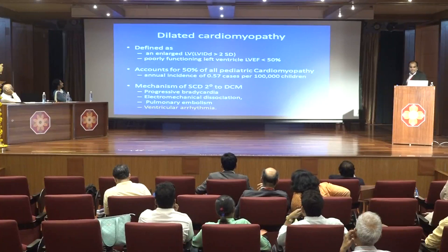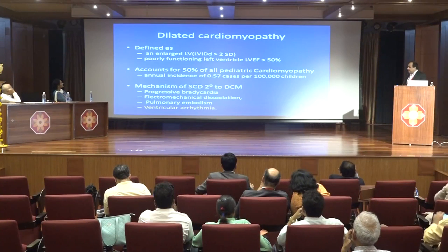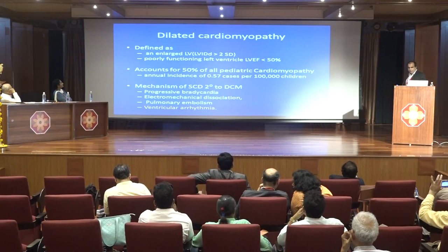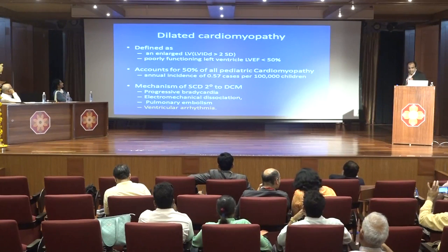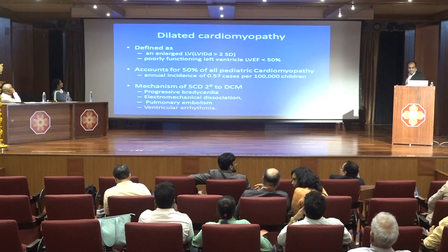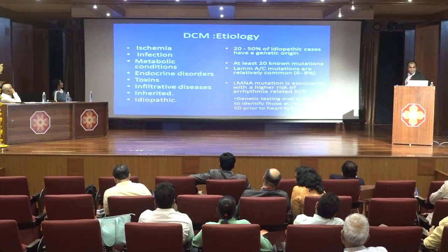The second cardiomyopathy is dilated cardiomyopathy, defined as an enlarged left ventricle more than 2 standard deviations with poorly functioning LV. It accounts for 50% of all pediatric cardiomyopathies. The mechanism is mainly ventricular arrhythmias, electromechanical dissociation, or pulmonary embolism.